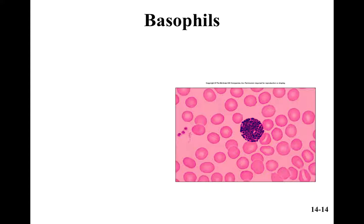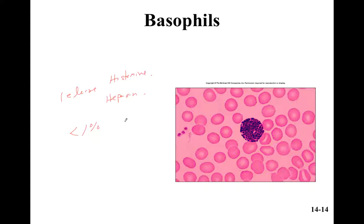Basophils release histamine and heparin. Heparin causes your blood not to clot, and histamine causes your blood vessels to become leaky. You'd find lots of basophils in an allergic reaction or where skin is damaged. These make up less than one percent of your leukocytes. They are relatively big — compare them to the red blood cells and notice they're bigger. If it looks granular and bigger than red blood cells, guess basophils.